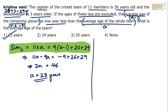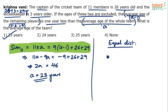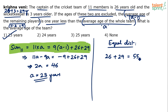Now let's say we solve this question using the concept of equal distribution. This is a regular method, but how do you solve it using equal distribution? This time, two members have been excluded. The first member had 26 rupees and the second member had 29 rupees. These two have been removed — 55 rupees have been removed from the group of 11. By removing this 55 rupees, the average age of the remaining players is one year less.